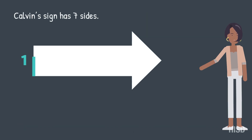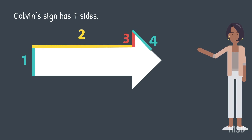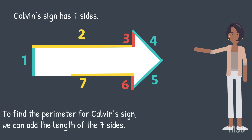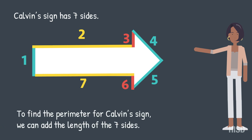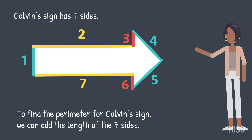Calvin's sign has seven sides. To find the perimeter for Calvin's sign, we can add the length of the seven sides.